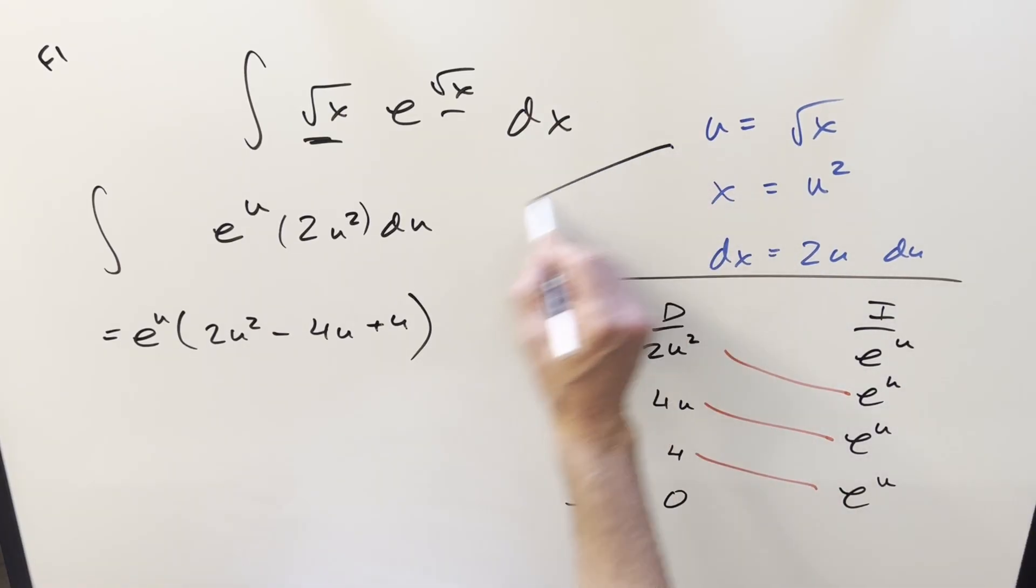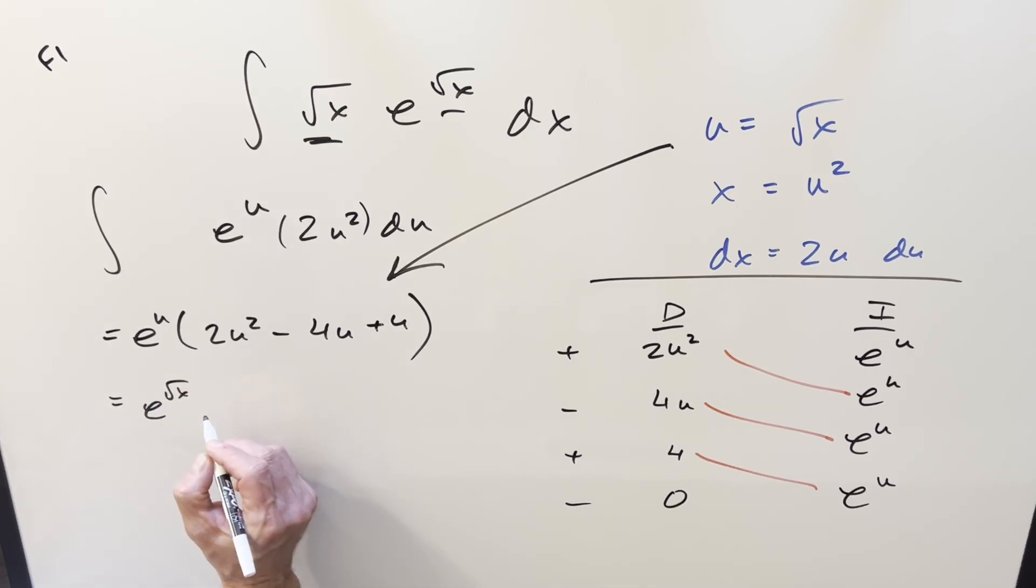And so all we have left is just to back substitute on it right here. So u equals square root of x, we're going to have e to the square root of x. U squared is just x. We're going to have 2x minus 4 square root of x plus 4. Add a plus c on there, and that's it.